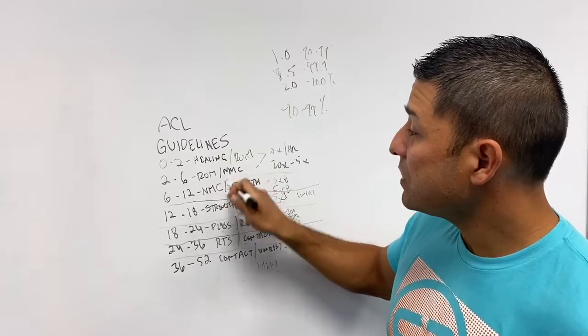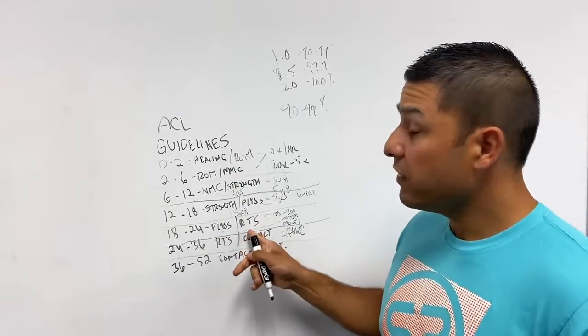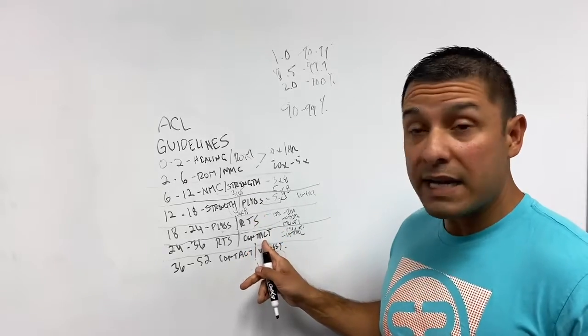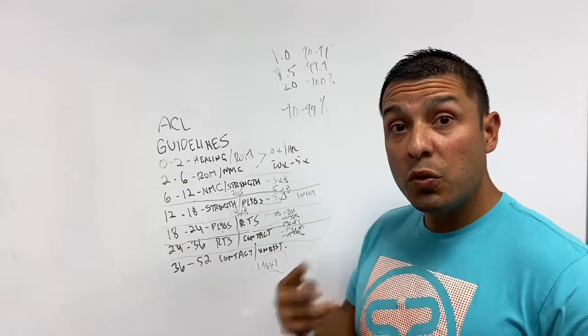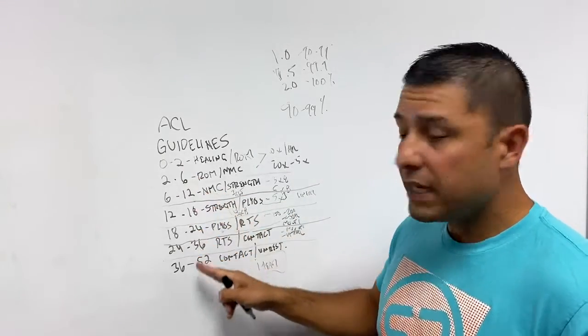If they don't achieve that range of motion, they can't advance too far into that neuromuscular control. If they don't advance in their plyos, they can't even advance to return to sport. If they don't return to sport, they can't get contact. So each one of these, there's two things that need to happen. There's time based criterion. So week two, four, six, eight, 18, 24, 36.